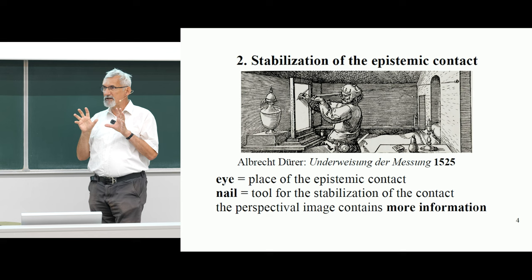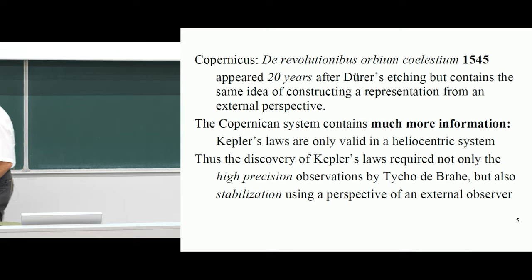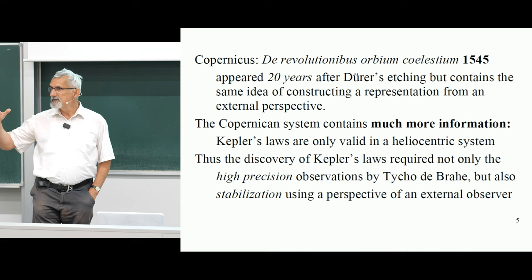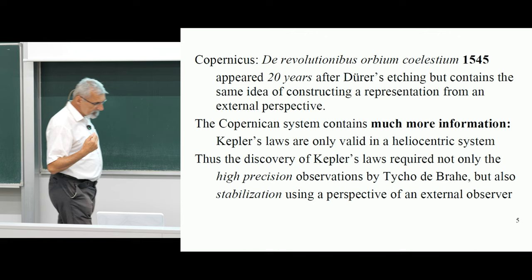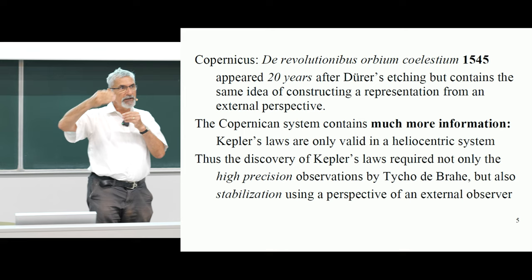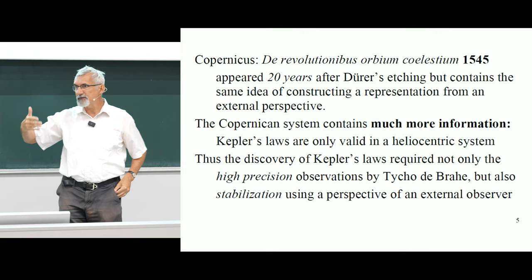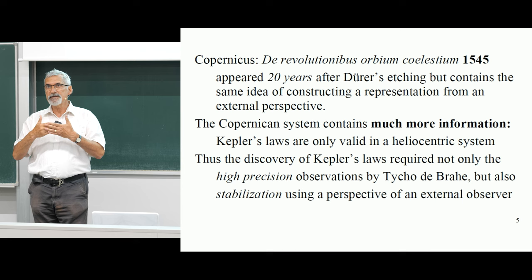What is Copernicus doing? The problem with astronomy at that time was that observations were done from different positions of the Earth — the Earth was moving around the Sun, so every observation was done from a different position. Just like the painter in the Middle Ages, everything was painted differently. Copernicus created an external position from which he looked on the astronomer sitting on the Earth. He said: the astronomer perceives a rotating sky, but actually he is rotating. The epistemic structure of Copernicus is the same as in Dürer — take an external position, and from that external position, reconstruct the experience gained from astronomical observations.